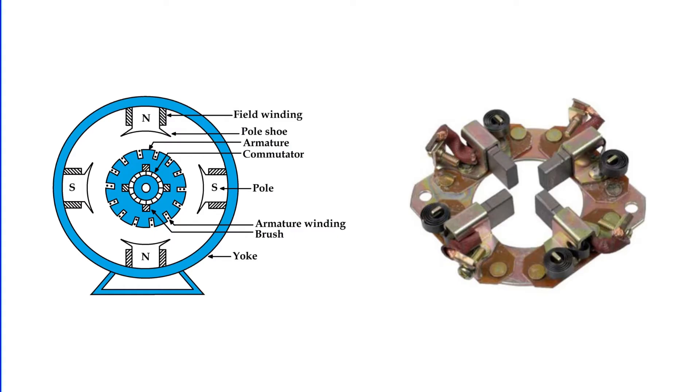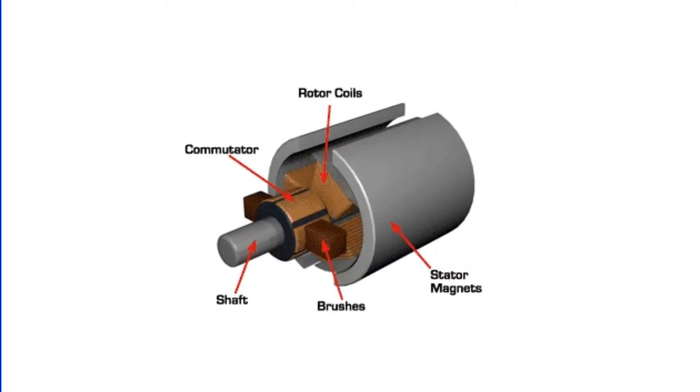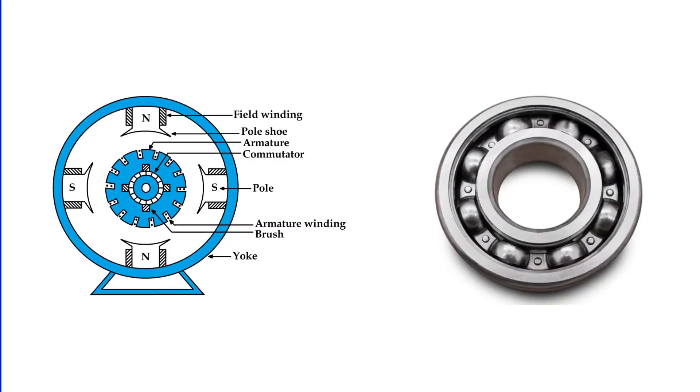Lastly, the brushes and bearings play critical supporting roles. The brushes, made of carbon or graphite, facilitate the transfer of current from the commutator segments to the external circuit, maintaining essential electrical contact between the stationary and rotating parts. Meanwhile, the bearings ensure the shaft rotates smoothly and uniformly, minimizing friction and supporting the rotating shaft.